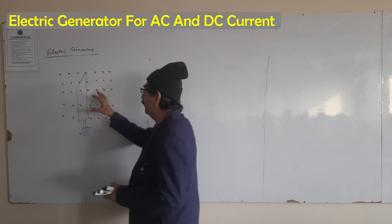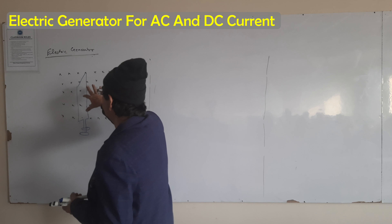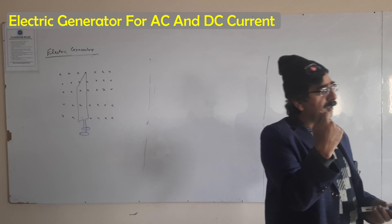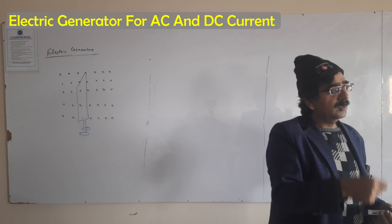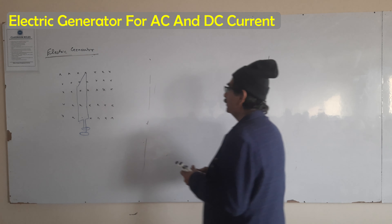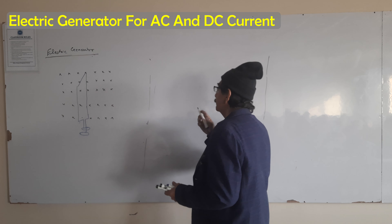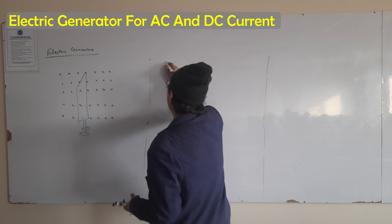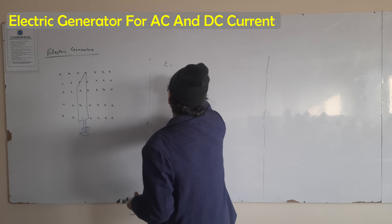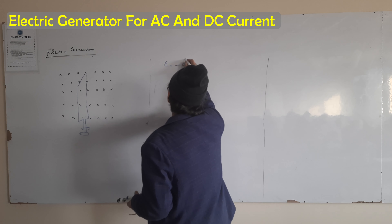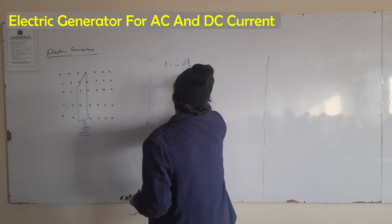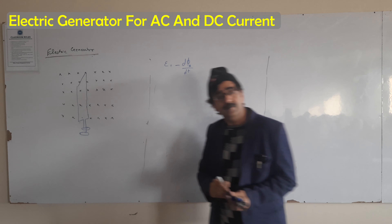If we have a rectangular coil placed between the permanent magnetic field and we start to rotate it, then the induced EMF will be equal to d(phi_b) over dt.